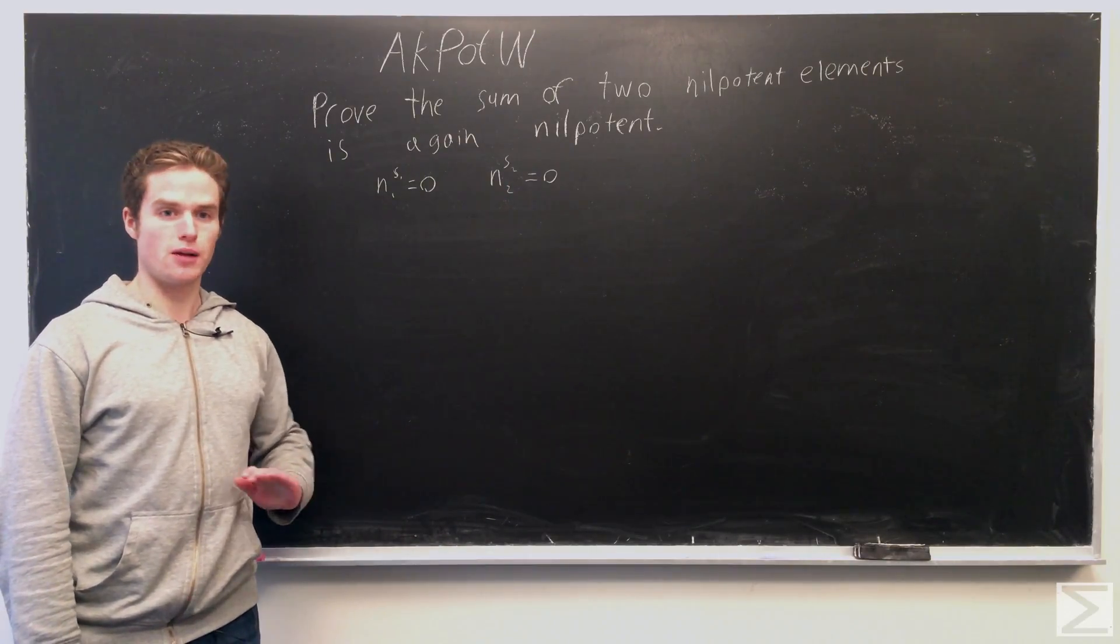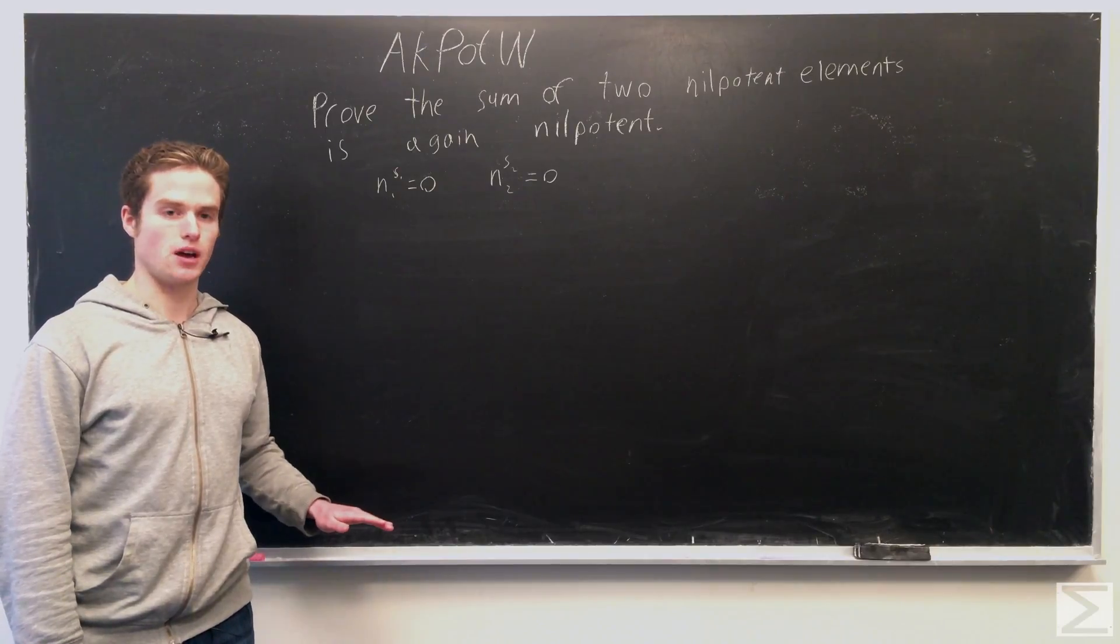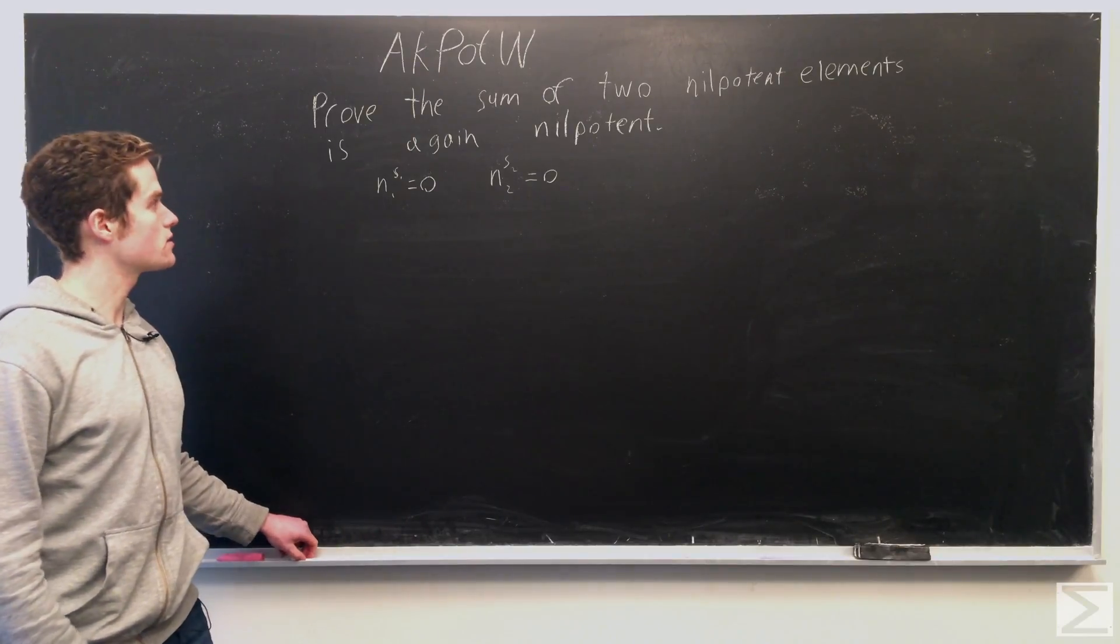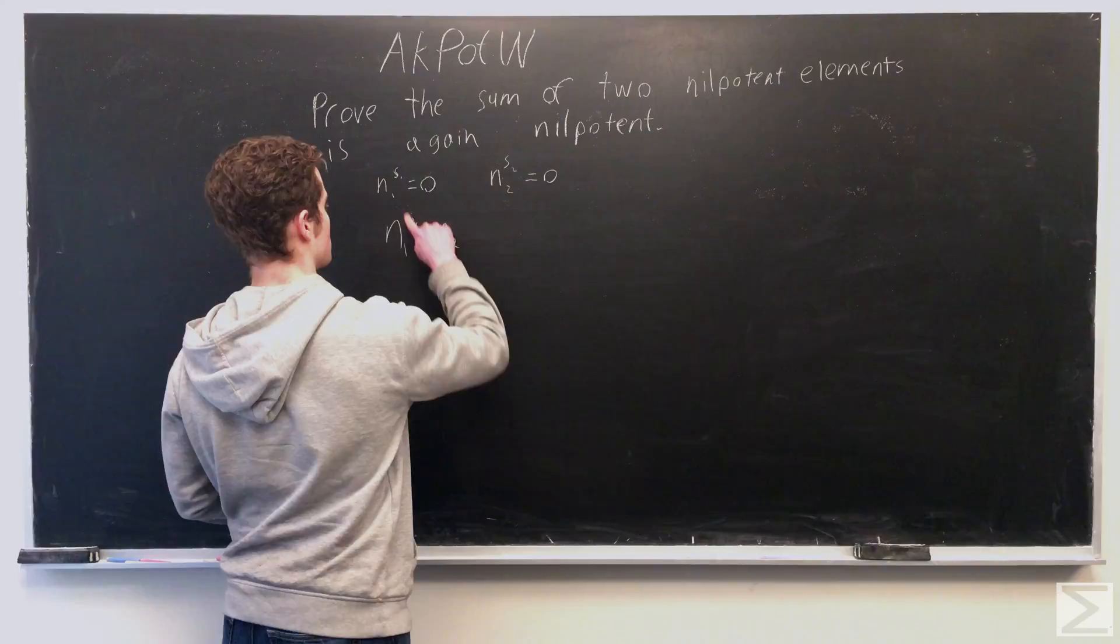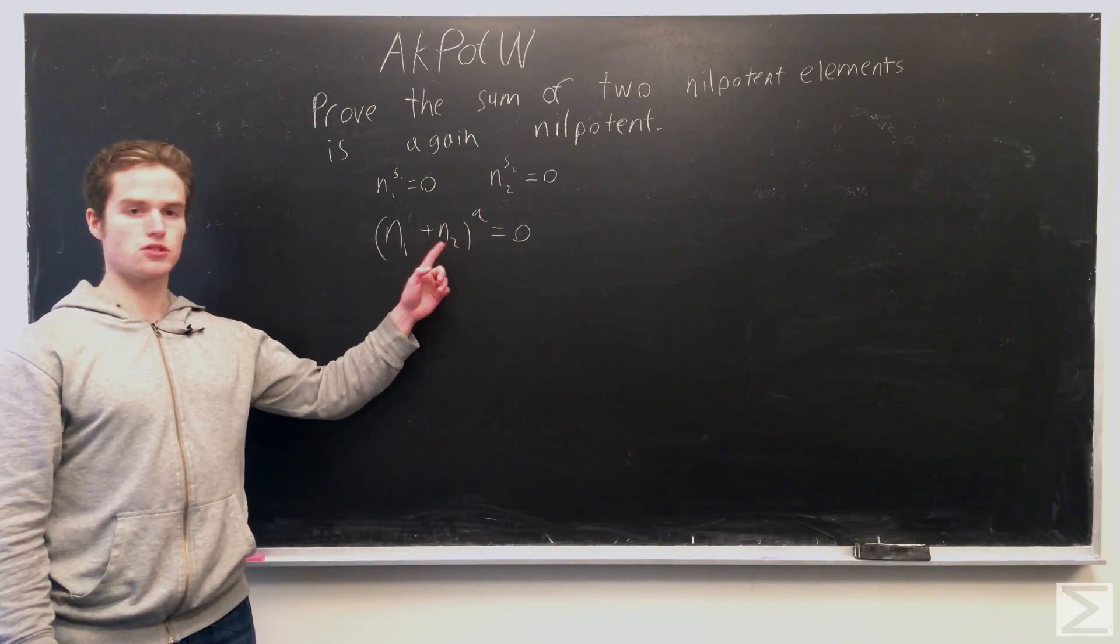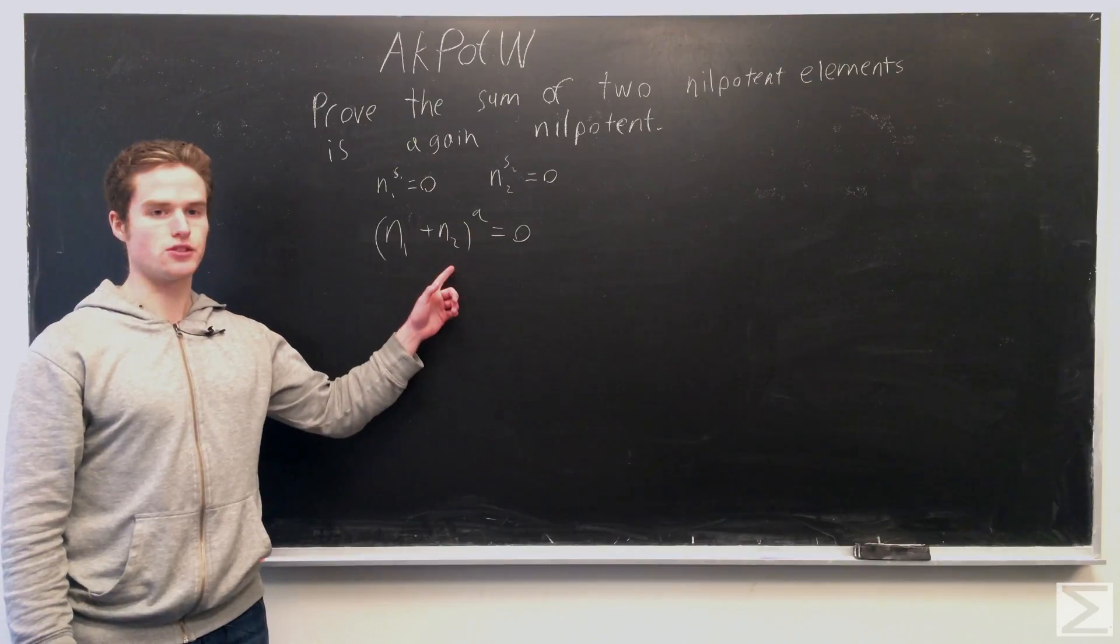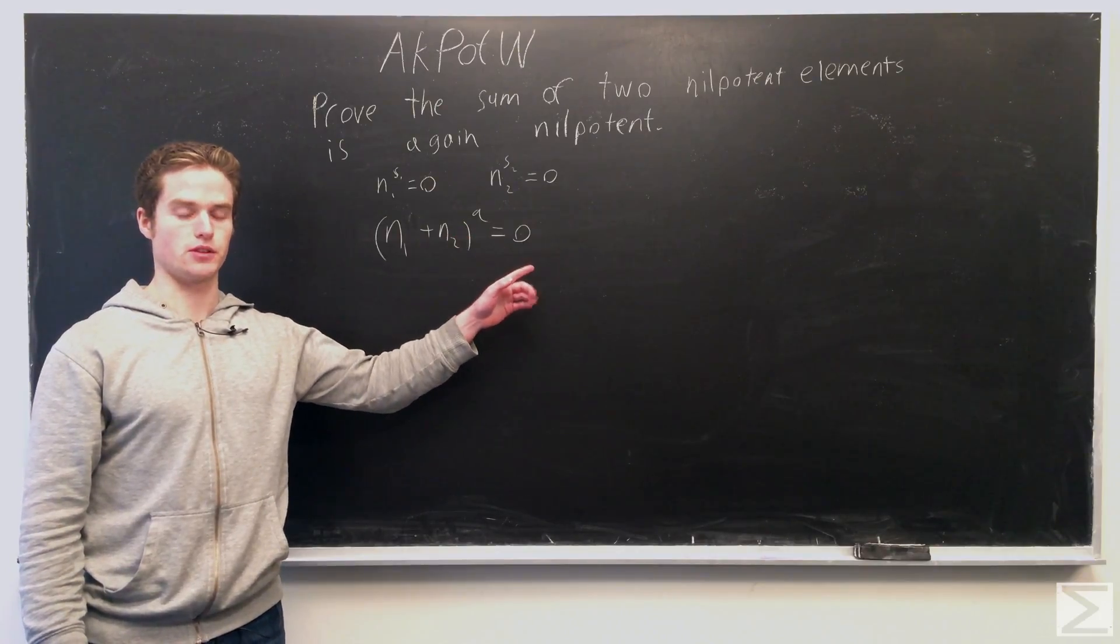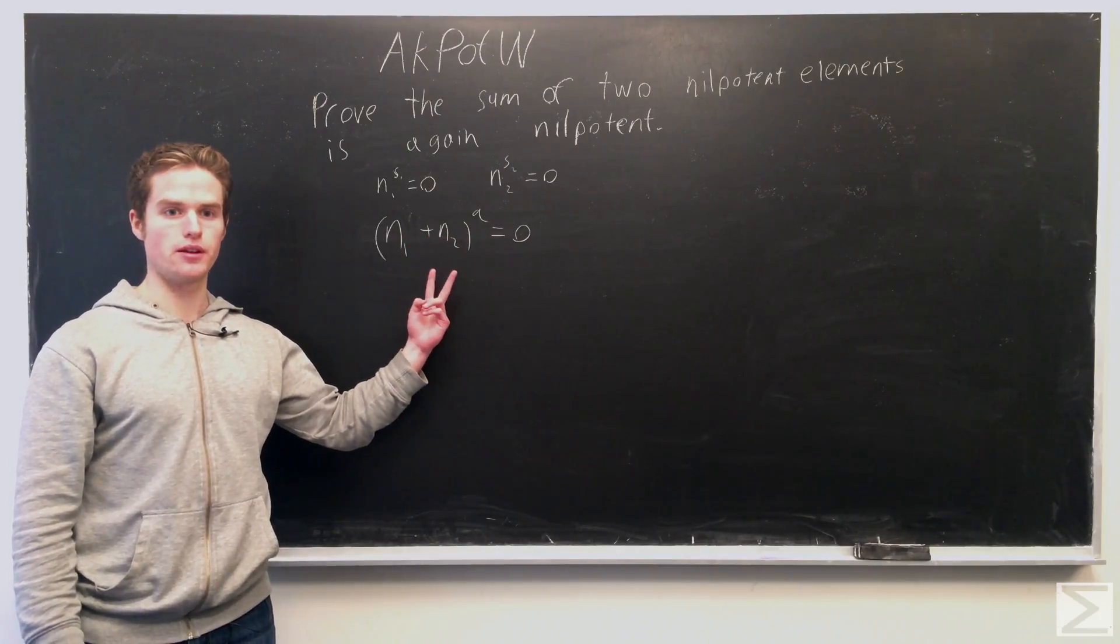And to do this problem, we just need to make one observation, really. So the problem is equivalent to trying to find some q such that n1 plus n2 to the q equals zero. This would make this n1 plus n2 nilpotent again.